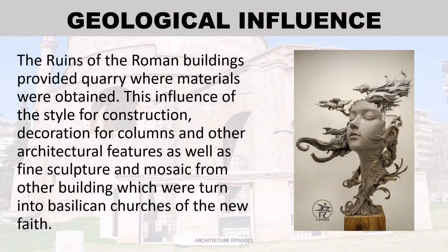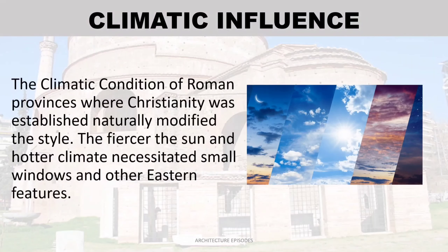Geological influence: The ruins of the Roman buildings provided a quarry where materials were obtained. This influenced the style for construction, decoration for columns, and other architectural features, as well as fine sculpture and mosaic from other buildings, which were turned into basilican churches of the new faith.